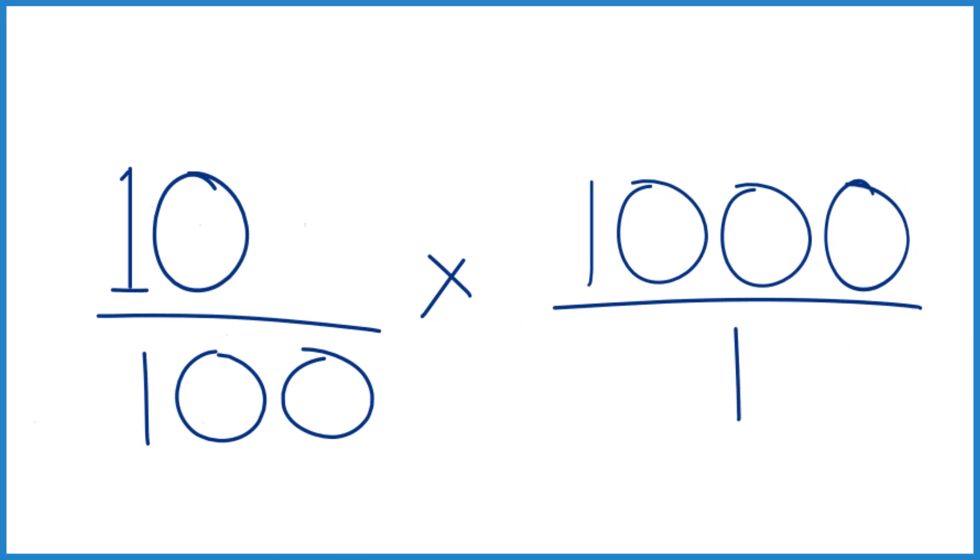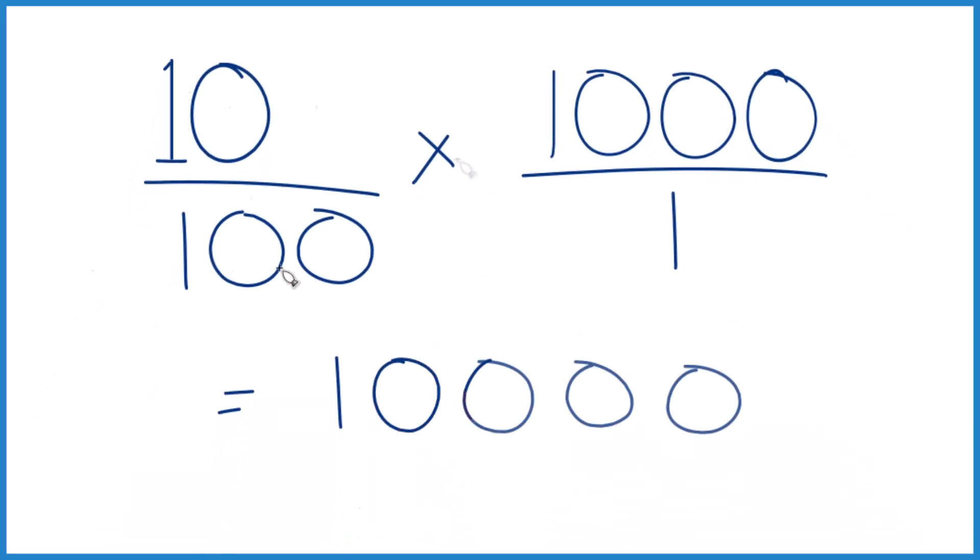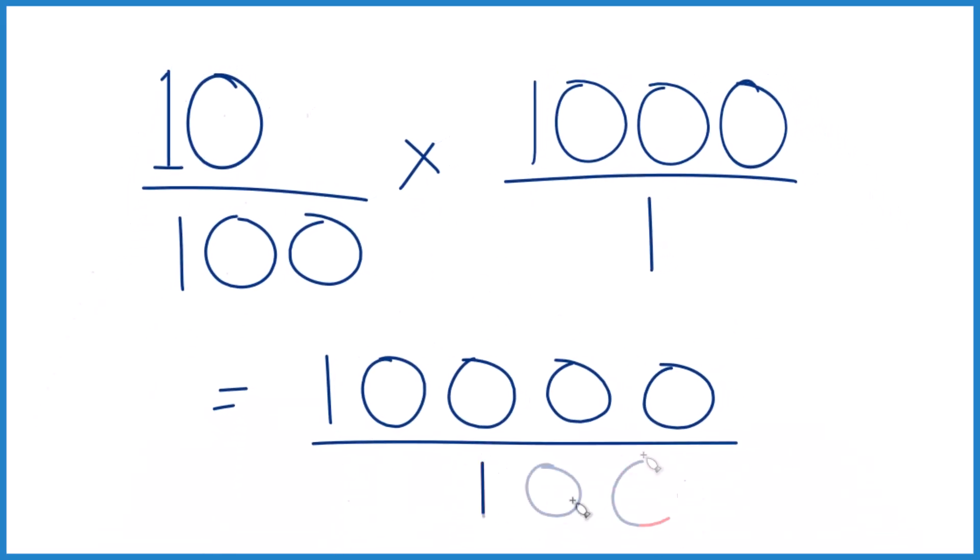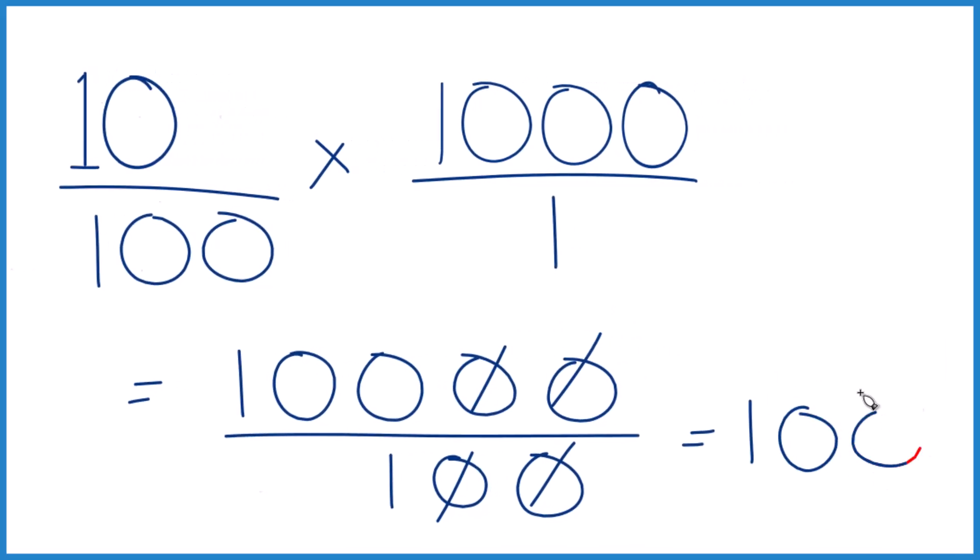10 times 1,000, that equals 10,000. And then 100 times 1, that is 100. So if you divide 10,000 by 100, you get 100. And that's what we found before.